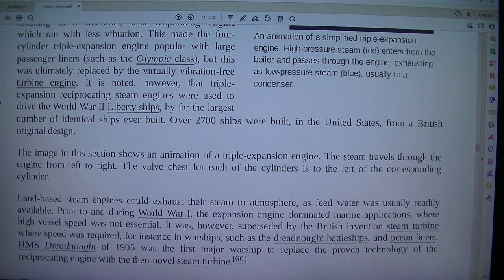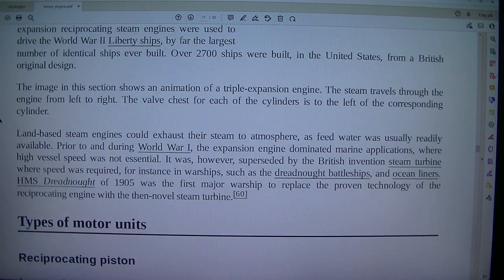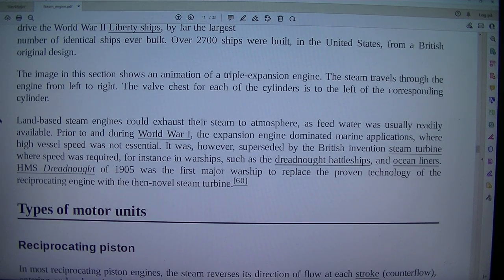It is noted, however, that triple expansion reciprocating steam engines were used to drive the World War II Liberty ships, by far the largest number of identical ships ever built. Over 2,700 ships were built in the United States from a British original design. The image in this section shows an animation of a triple expansion engine. The steam travels through the engine from left to right. The valve chest for each of the cylinders is to the left of the corresponding cylinder.